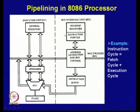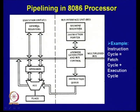This is the internal architecture of the 8086 processor. As you can see, it has two distinct units: one is known as the execution unit and another is the bus interface unit. These two units essentially work in an overlapped, pipelined manner.